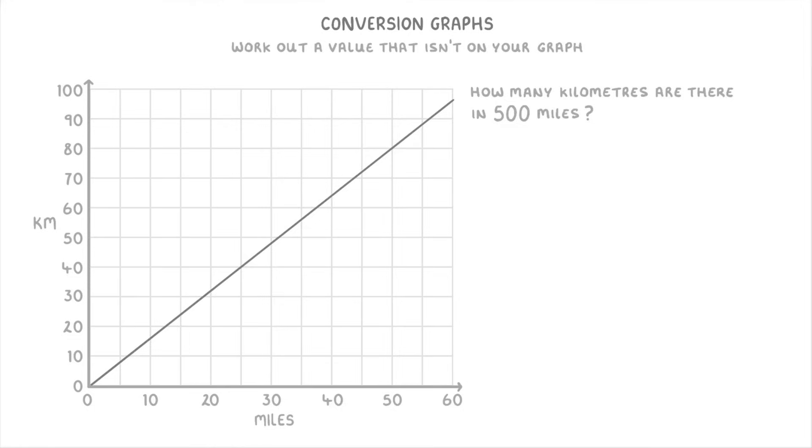For example, using our graph, we can tell that 50 miles is equivalent to 80 kilometers. So if we want 500 miles, which is 10 times more than 50, we can just multiply the 80 kilometers by 10 as well, to find that 500 miles must be equivalent to 800 kilometers.